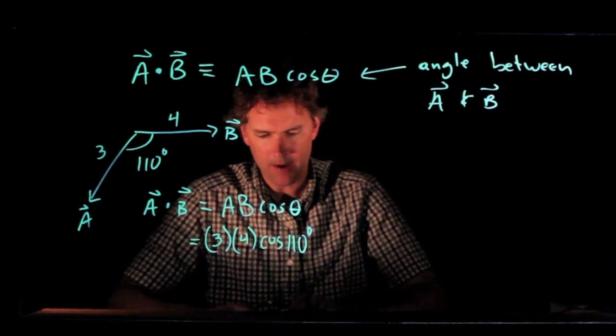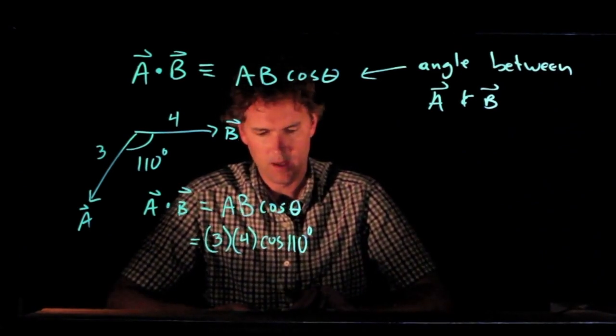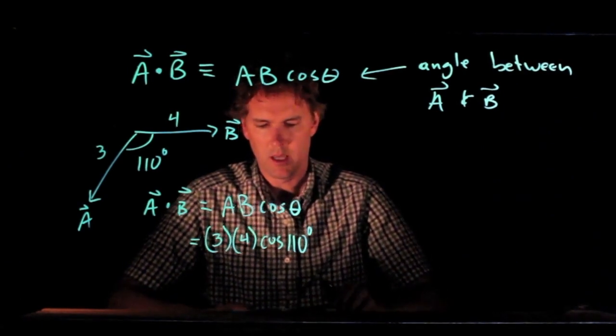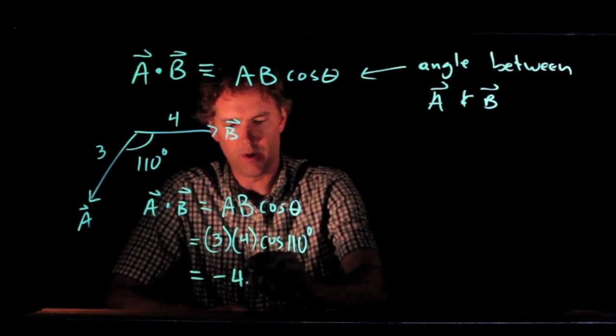So, let's calculate what we get. 110 cosine, it's indeed a negative number, times 3 times 4 equals what? I get negative 4.1.